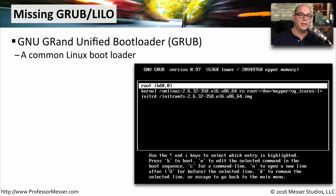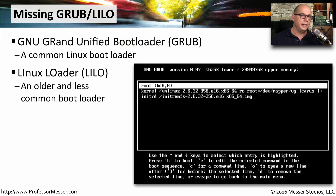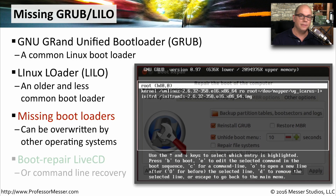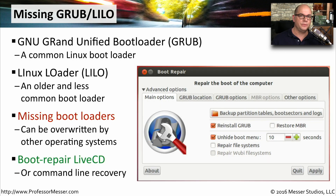If you're running Linux, you're probably using a bootloader called GRUB or LILO. GRUB is the GNU Grand Unified Bootloader and is very common on Linux systems. On older Linux distributions, you may find LILO, which stands for Linux Loader. If either GRUB or LILO is missing or damaged, your operating system won't load. These bootloaders can often be overwritten by other operating systems — for example, installing Windows in another partition may overwrite GRUB or LILO. Fortunately, there are a number of live CDs for Linux that can repair these problems, reinstall GRUB, unhide the boot menu, and repair file systems.